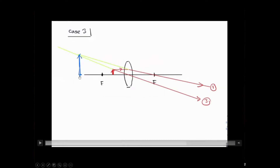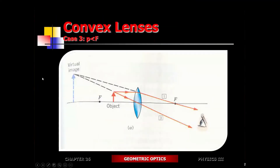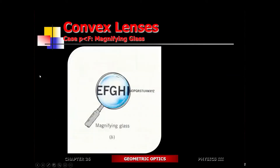So the image is going to be upright. It's forming in front of the lens in the virtual space, so this is a virtual image — it's upright and it's also larger. So by looking from this direction, you will get to see it beyond the lens, because the real space is where you're looking from, and the virtual space is on the other side of the lens.